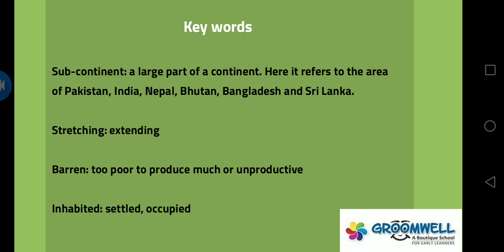First we are going to start with the keywords. First is 'subcontinent' — a large part of a continent, here it refers to the area of Pakistan, India, Nepal, Bhutan, Bangladesh and Sri Lanka. 'Stretching' means extending. 'Barren' means too poor to produce much, or unproductive. 'Inhabited' means settled, occupied. These are the four important keywords in this chapter which you have to learn.